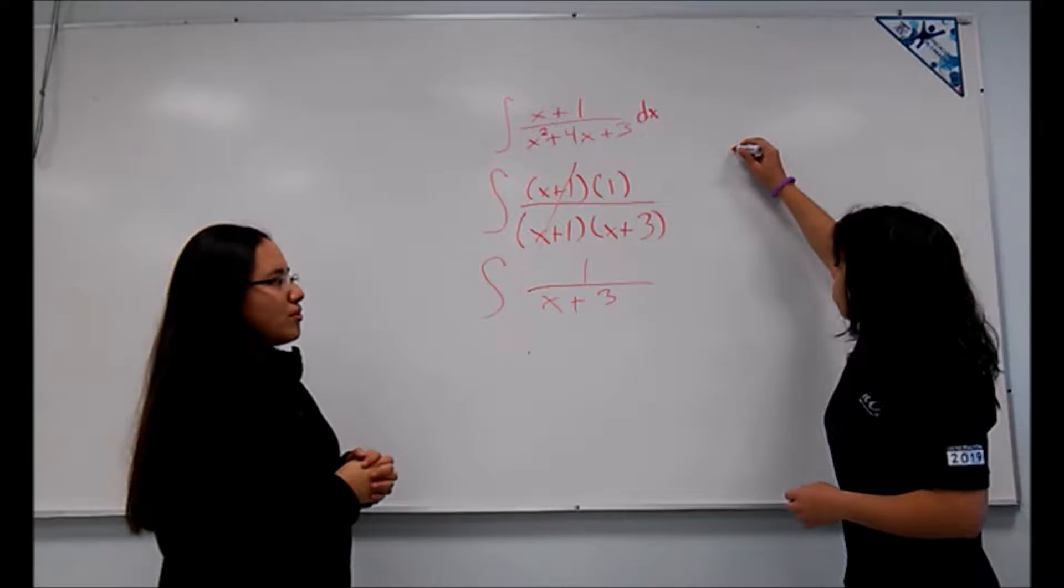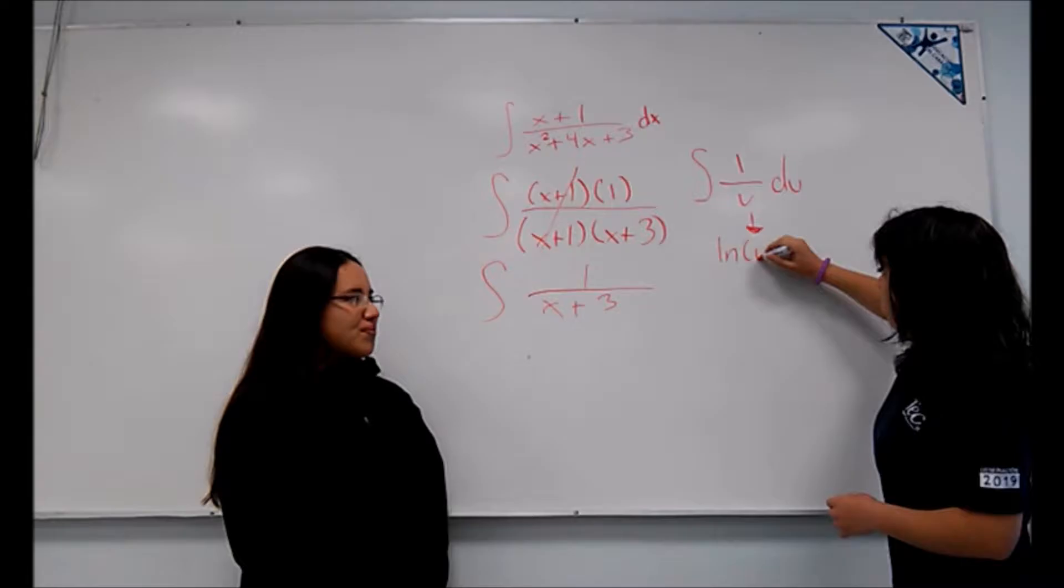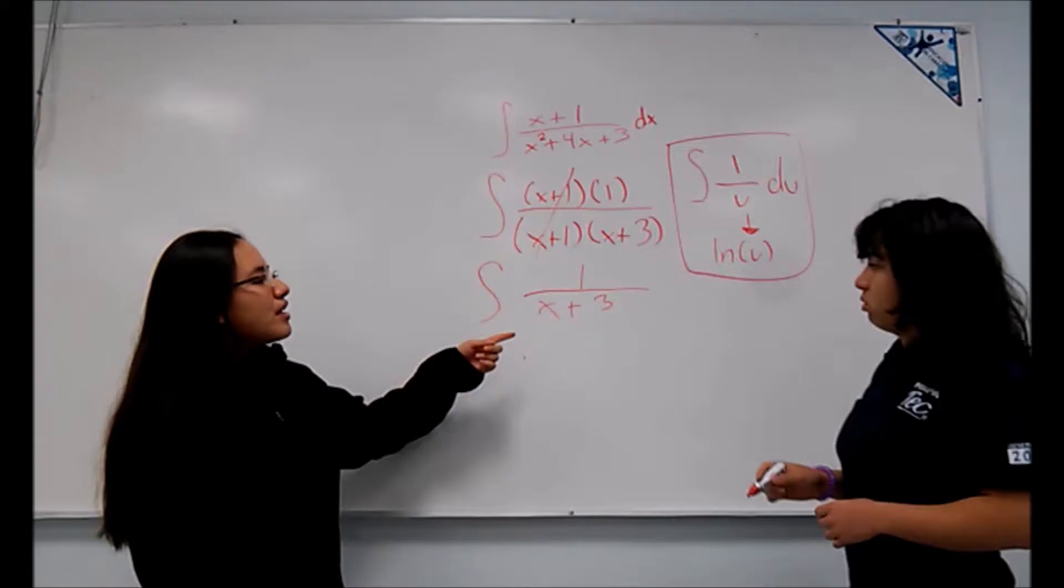If we consider that in the formula, the integral of 1 over u multiplied by du, the answer is the natural logarithm of u.